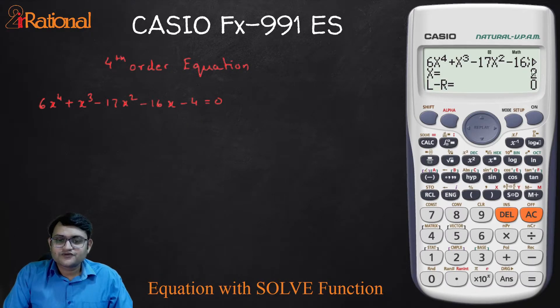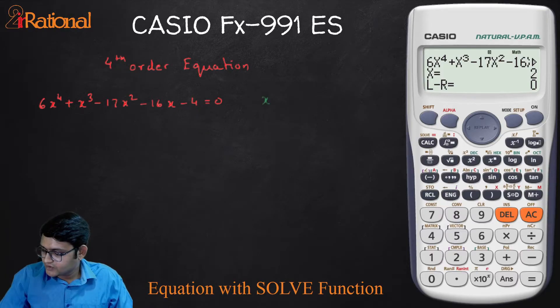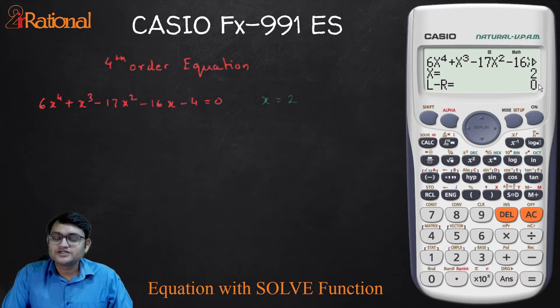See the first equation, first value that it is showing me is X is equals to 2. So I will write that down. This here, L minus R is equals to 0 tells us that this is an exact root. That means we got X is equals to 2 solves this equation perfectly. Sometimes the equation may not solve it perfectly. It will give you an approximate answer. Then you will find here some value written. The higher the value, the more approximation we have. That's it.